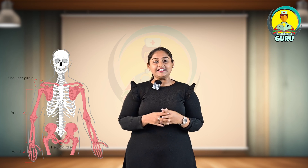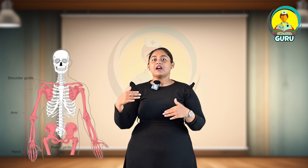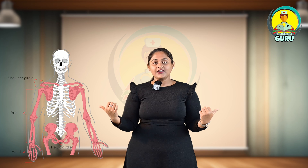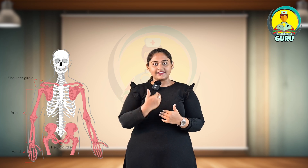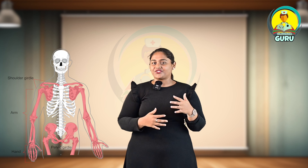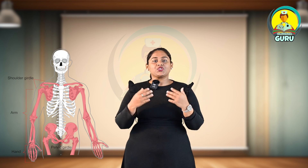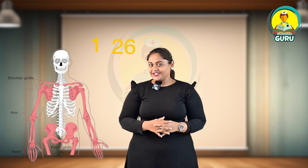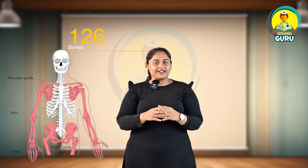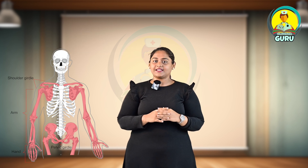Coming to the appendicular skeleton — these are the bony parts which are placed peripheral to the body and connected to the axial skeleton, and they help in interaction with the environment. These include mainly the shoulder girdle, pelvic girdle, upper extremities, and lower extremities. The appendicular skeleton includes 126 bones in total.